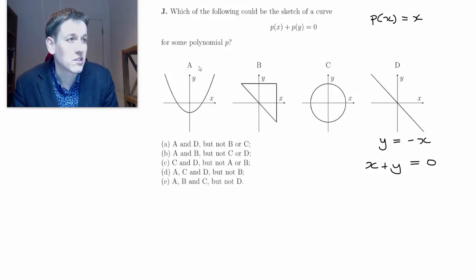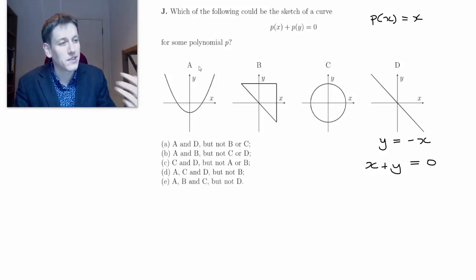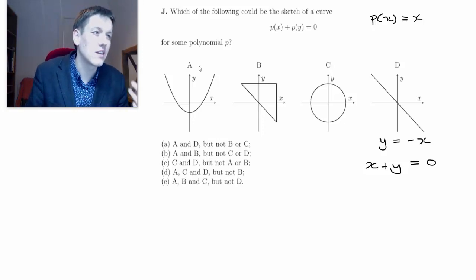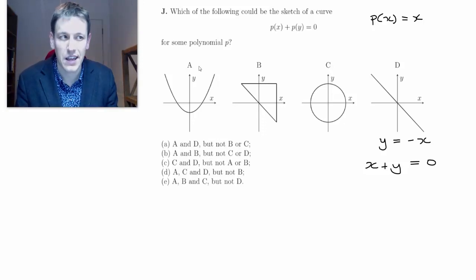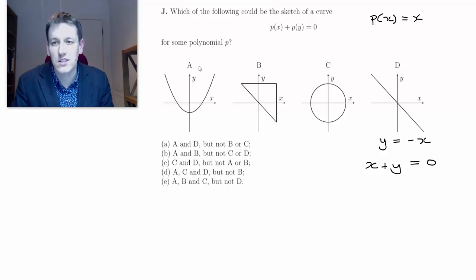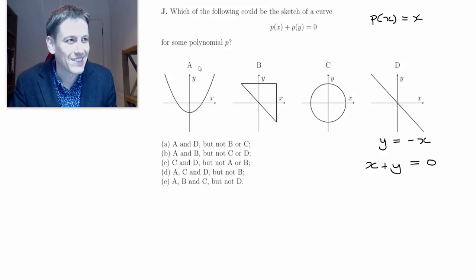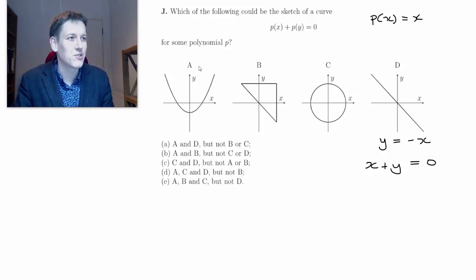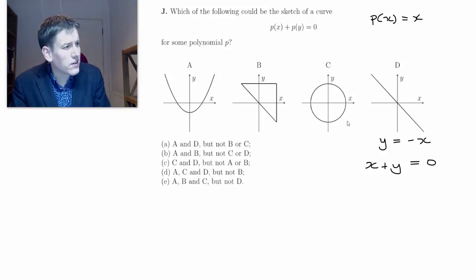Remember, to be a polynomial it just has to be any number multiplied by x to an integer power and then added together - like x² + 3x³ + ½x⁵. So just natural number powers and constants - no negative powers or fractional powers or anything like that. So d definitely works.